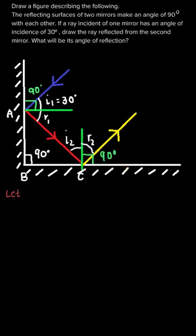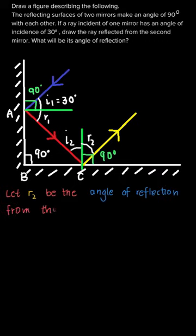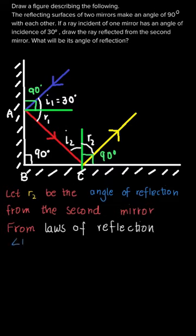The ray represented by yellow color is the reflected ray from the second mirror. The ray reflected from the first mirror is incident on the second mirror — so the red ray is the incident ray for the second mirror. This gives us the angle of incidence and angle of reflection for the second mirror. Let r2 be the angle of reflection from the second mirror.